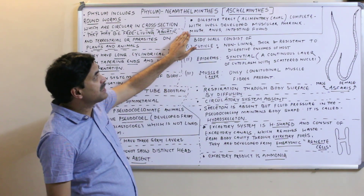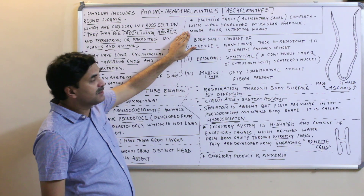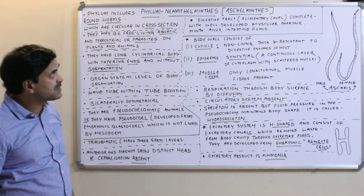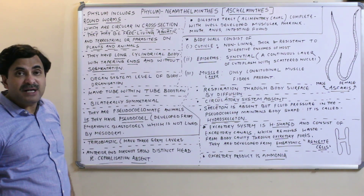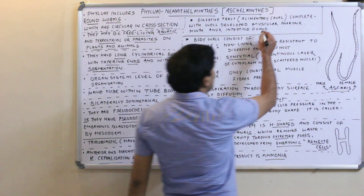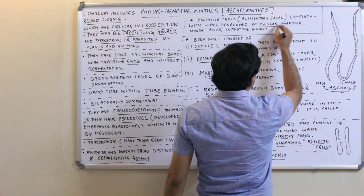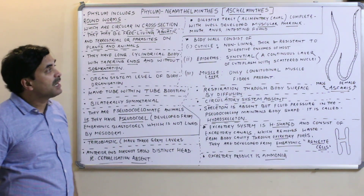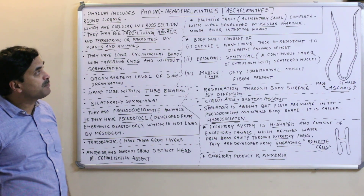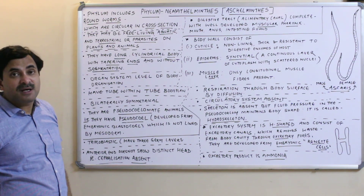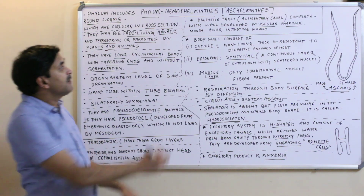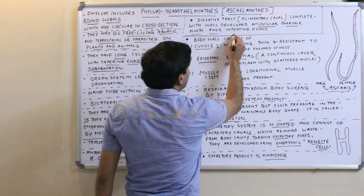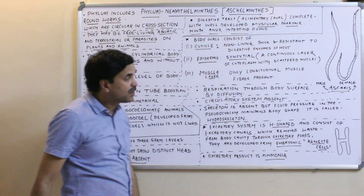The alimentary canal is complete with a well-developed muscular pharynx. The mouth, anus, and intestines are all present in the alimentary canal.